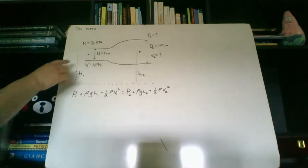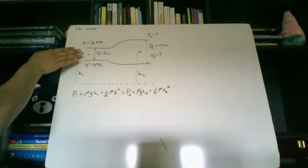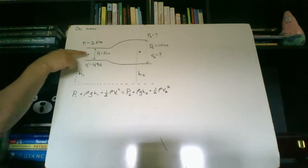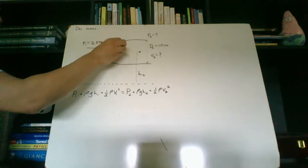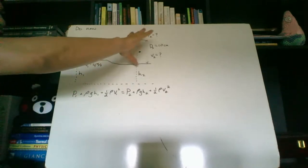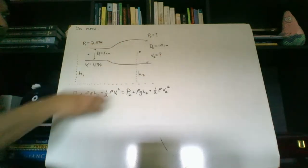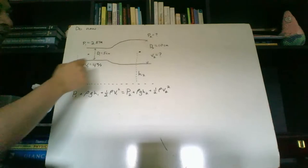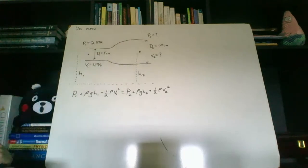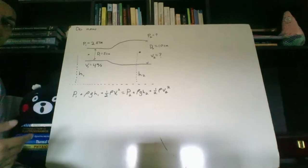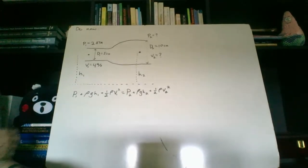Here's our question. We have a tube or a pipe and water is flowing at 4 meters per second through this diameter right here, and it's going to open up. We want to know what the final velocity going through this pipe is, as well as what the final pressure is. We have two equations: the Bernoulli equation and another equation that relates the flow rates.